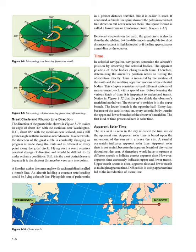Great Circle and Rhumb Line Direction. The direction of the great circle constantly changes as progress is made along the route and is different at every point. Flying such a route requires constant change of direction, which would be difficult under ordinary conditions. Still, it is the most desirable route because it is the shortest distance between any two points. A line that makes the same angle with each meridian is called a Rhumb Line. An aircraft holding a constant true heading would be flying a Rhumb Line, resulting in a greater distance traveled but easier to steer. If continued, a Rhumb Line spirals toward the poles, forming a spiral called a loxodrome or loxodromic curve. Between two points on the Earth, the great circle is shorter than the Rhumb Line, but the difference is negligible for short distances.